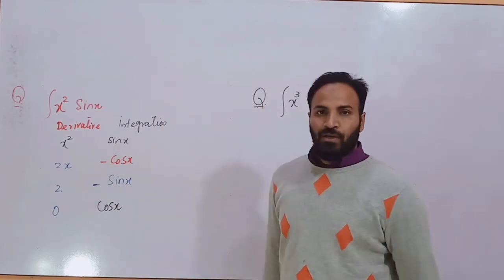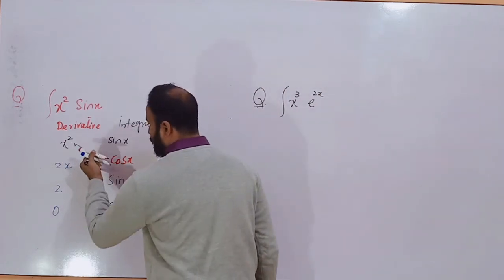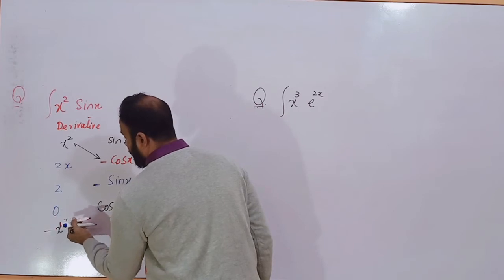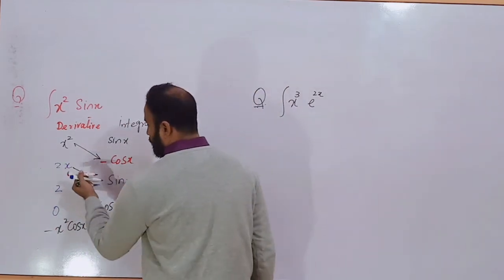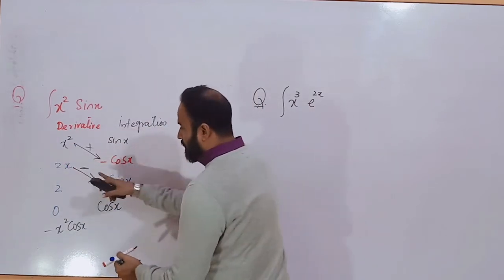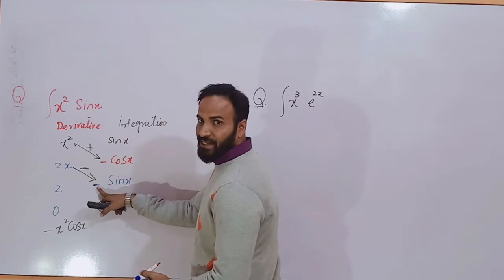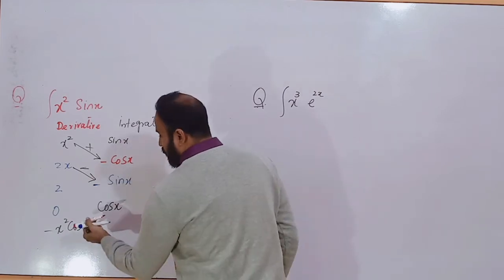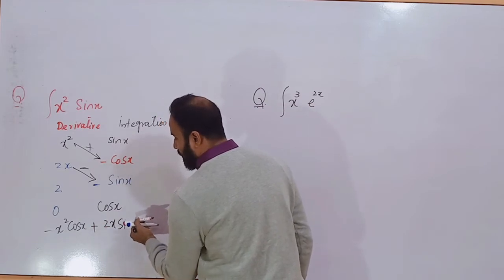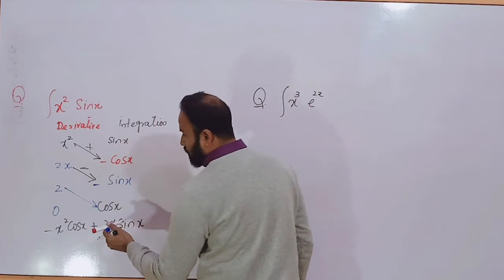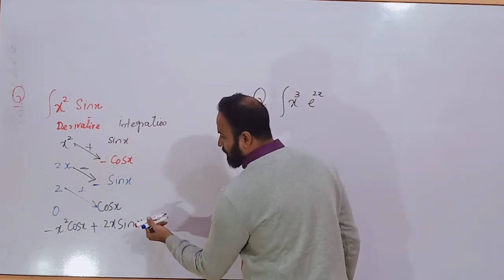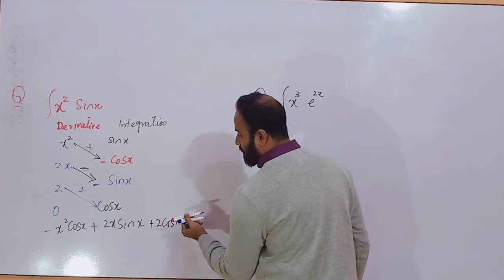Now students, you get the answer. Multiply these two quantities: minus x² cos x. Multiply these two quantities — first you take the positive sign, now you will get the negative sign. This negative and this negative will be positive, so this is positive 2x sin x. Again multiply these two quantities with positive sign, so it will be plus 2 cos x plus C.